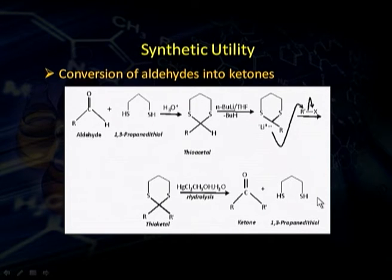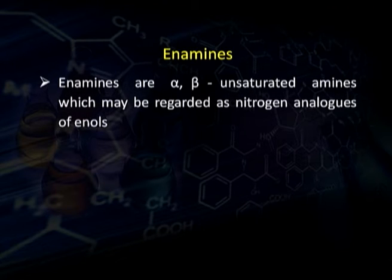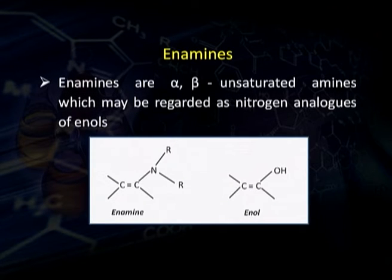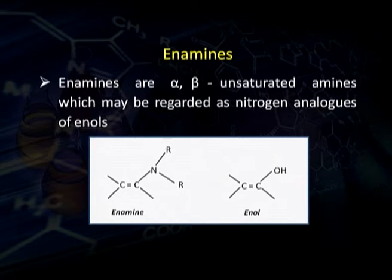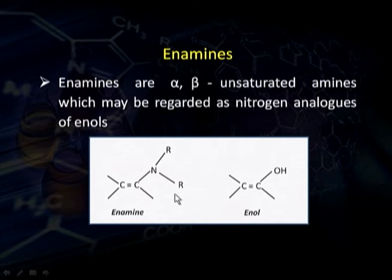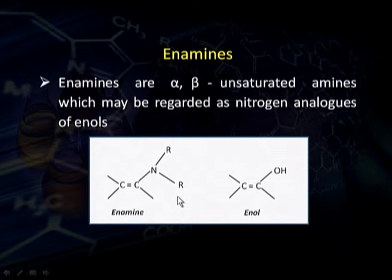In this way we have completed the topic of 1,3-dithianes. The second topic in this lesson is enamines. What are enamines? As the name indicates: en plus amine — en means double bond, amine means amine. Enamines are alpha-beta unsaturated amines, which may be regarded as nitrogen analogues of enols. Like enols, these enamines are nitrogen analogues and are known as enamines.